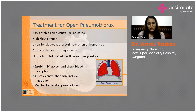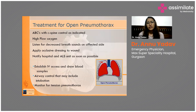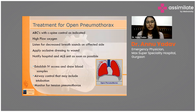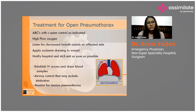Treatment follows the ABC approach — airway, breathing, and circulation. In these patients, the airway may not be compromised but breathing will be. This can lead to metabolic acidosis due to stress. The airway must be patent; if not, we ensure a safe patent airway. C-spine control is mandatory in every trauma patient. For breathing difficulty, start high-flow oxygen — use a bag-mask ventilation or a non-rebreathing mask.